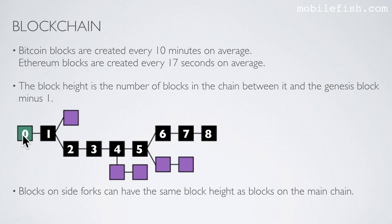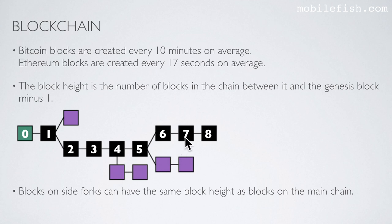In this example the Genesis block has block height 0, this has block height 2, etc. Blocks on side forks can have the same block height as blocks on the main chain. This block and this block both have block height 2. They both have block height 4, and this block and this block both have block height 7.